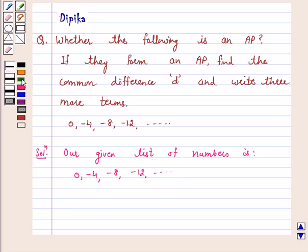We have a₂ - a₁ is equal to -4 - 0, which is equal to -4.